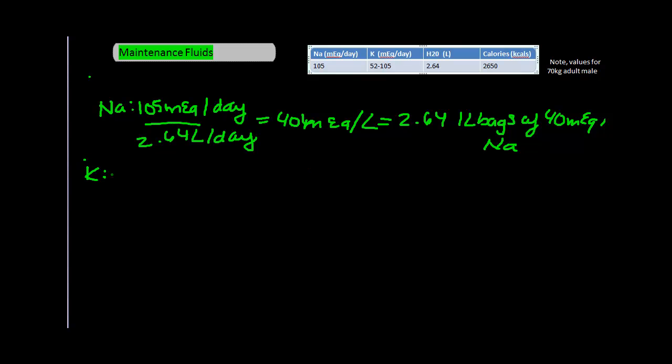So, for potassium, it's 52 to 105 mEq per day. Divide that by 2.64 liters per day. And you would also get 20 to 40 mEq of K per liter.